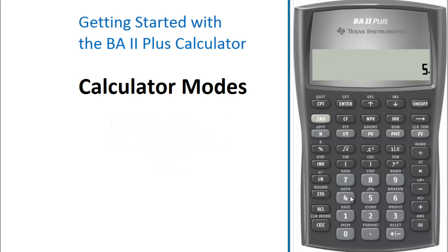5 plus 4 times 2, and the result is 13. This is because the calculator follows the order of operations and performs the multiplication before addition. It first multiplies 4 by 2 to obtain 8, and then adds 5 to the result.